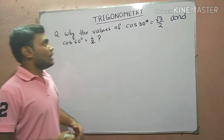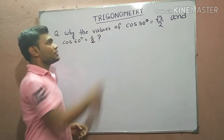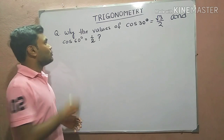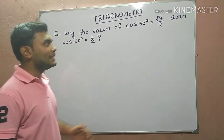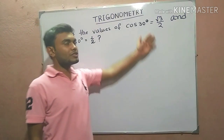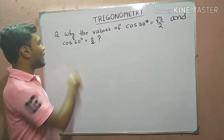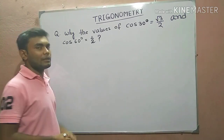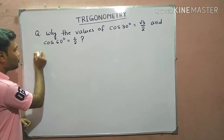Hello friends. Our today's topic is trigonometry. In this video we will learn why the value of cos 30 degree is root 3 by 2 and that of cos 60 degree is 1 by 2.